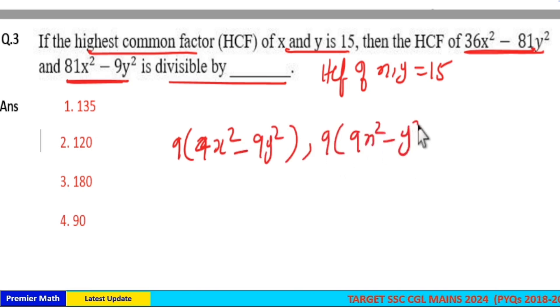Now to check the divisibility, take the HCF of these two terms because HCF of x and y is 15 means for any value of x and y, x and y is divisible by 15.